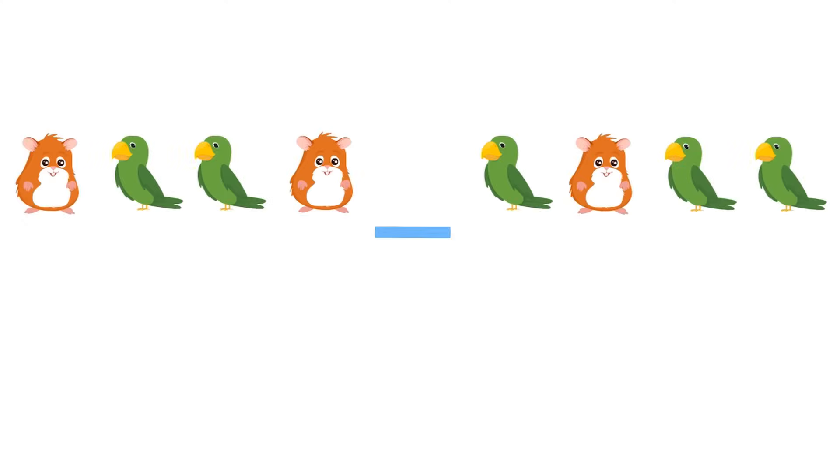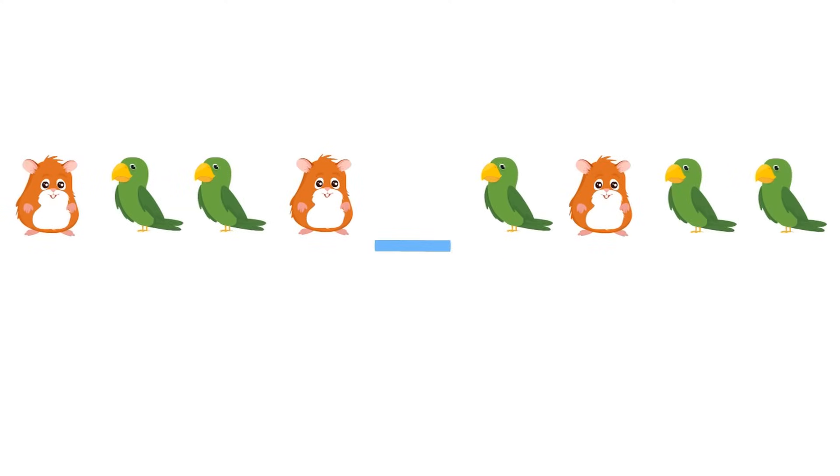All right, let's look at this next pattern. Oh, goodness. Look at this series of creatures. These animals. The first is an interesting looking hamster, followed by two birds. Then there's a hamster, and then there's a mystery spot that we have to complete, and a bird, and then the hamster, and then two birds. That's pretty cool.